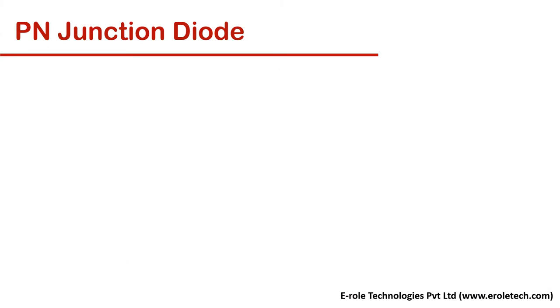Diode is a two terminal electronic component. These two terminals are called anode and cathode.